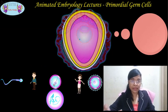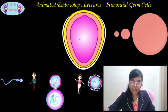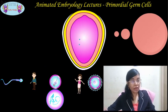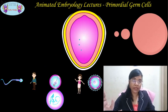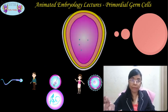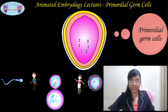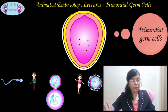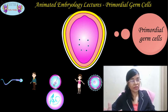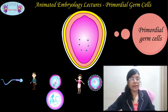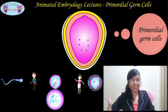By the second week itself, some cells of the epiblast are marked for the future primordial germ cells. The bilaminar germ disc is now ready to progress into the next stage — the trilaminar germ disc stage.